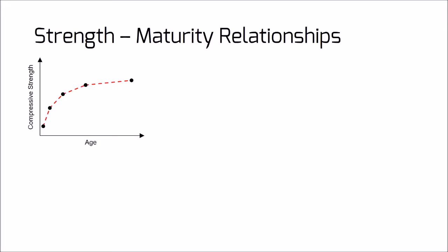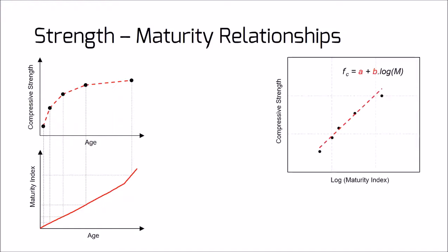When all measurements are done, we will be able to develop the strength-to-maturity relationship. Knowing the datum temperature and temperature history, one can measure the maturity index. For each compressive strength data point, the corresponding maturity index is calculated. The compressive strength is then plotted against the logarithm of the maturity index, and a linear regression is used to develop the equation. The A and B coefficients are determined for the best fit, giving the relationship between maturity and compressive strength, which can be used to predict the early age strength of concrete.